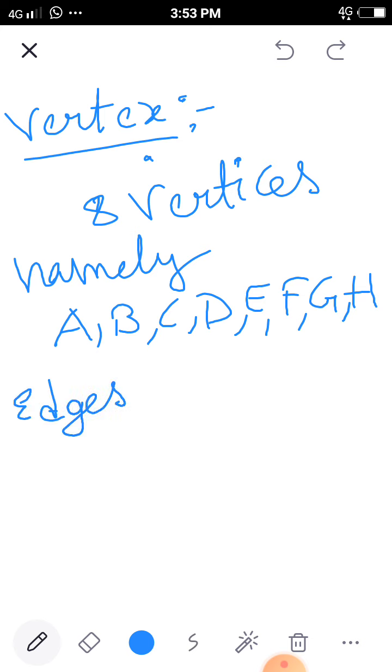Now next final thing, edges. What is the definition of edges? Line segment. It is a line segment where two faces meet. So here how many faces are there? Six faces. So how many edges should be? Twelve. Two faces meet, there is a line segment, there is one edge. Six faces, so twelve edges.